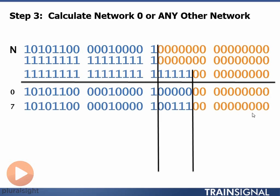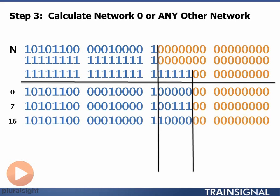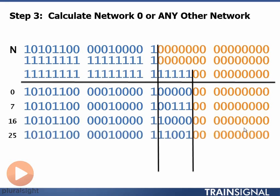Network number sixteen: here we have 10000 in my borrowed bits section, network number sixteen, all zeros in the host portion. Last, network number 25: convert 25 to binary, and that is 11001. All zeros in my host portion is my network address.